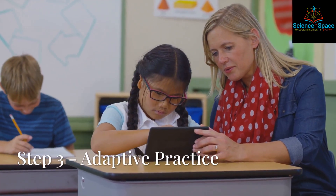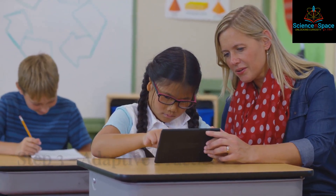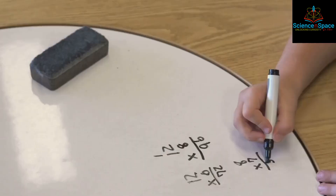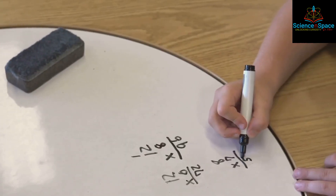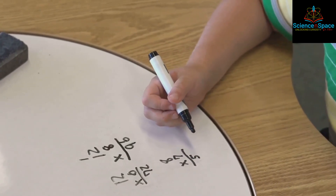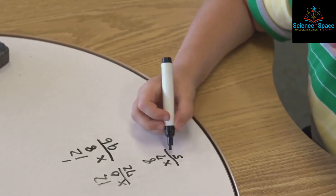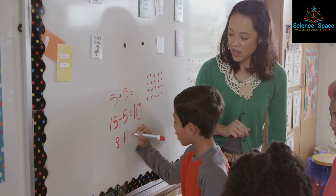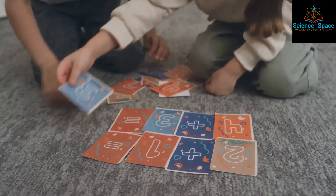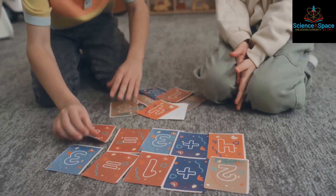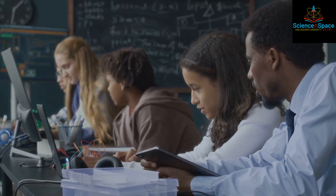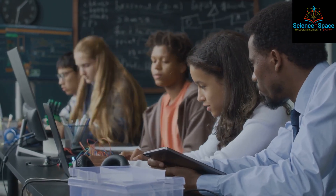Step 3: Assign adaptive practice. AI thrives on practice. Assign adaptive exercises that adjust to a student's pace and accuracy. Struggling with fractions? The AI offers step-by-step problems. Ready to race ahead? It levels up the difficulty automatically. This creates a Goldilocks zone — not too hard, not too easy.